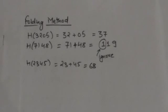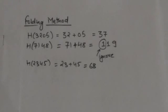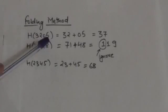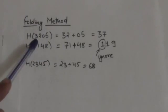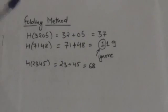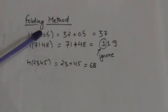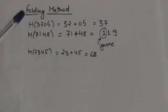Next is the folding method. The key is partitioned into two parts, each part having two digits, because we need 2-digit addresses. Then we add these parts and ignore the carry. For key 3205: it has four digits, so we partition it into two parts — 32 and 05. Adding them gives 37, so the hash value of 3205 is 37.